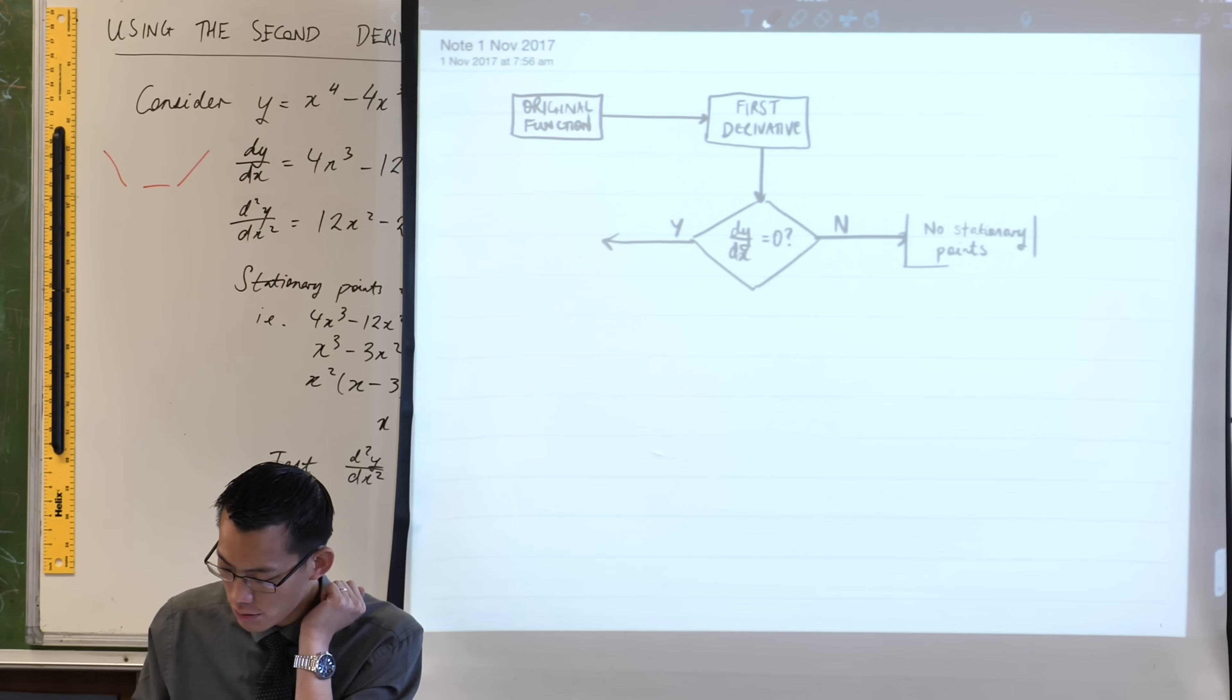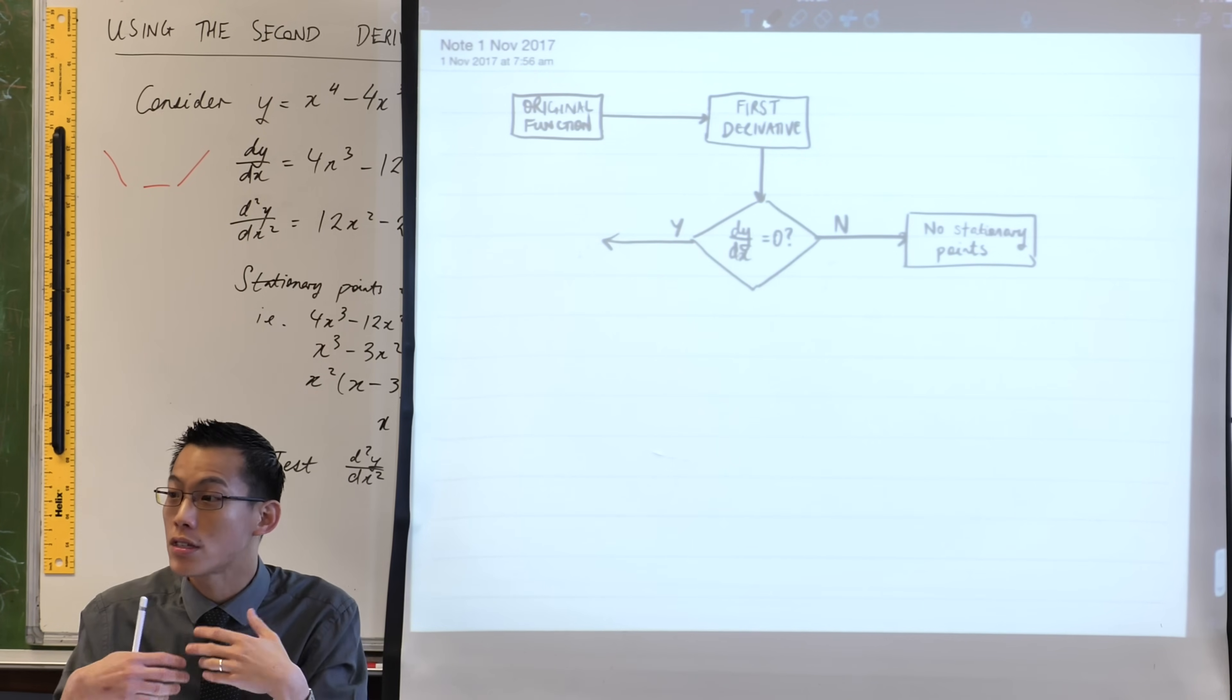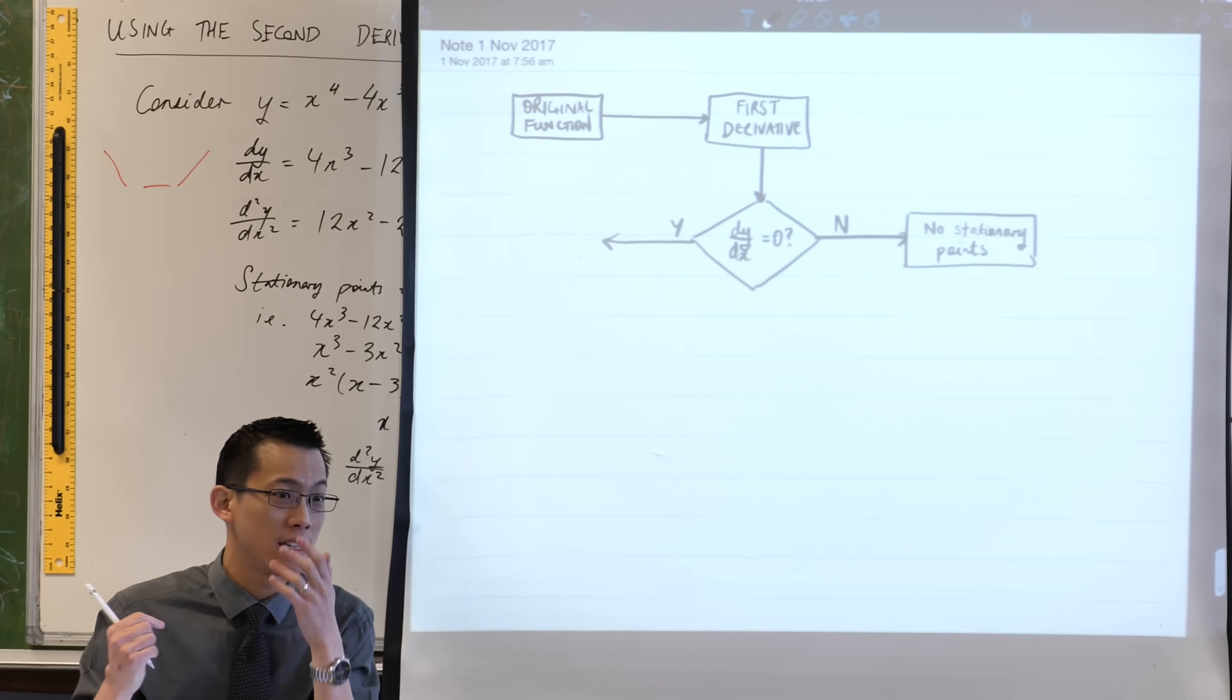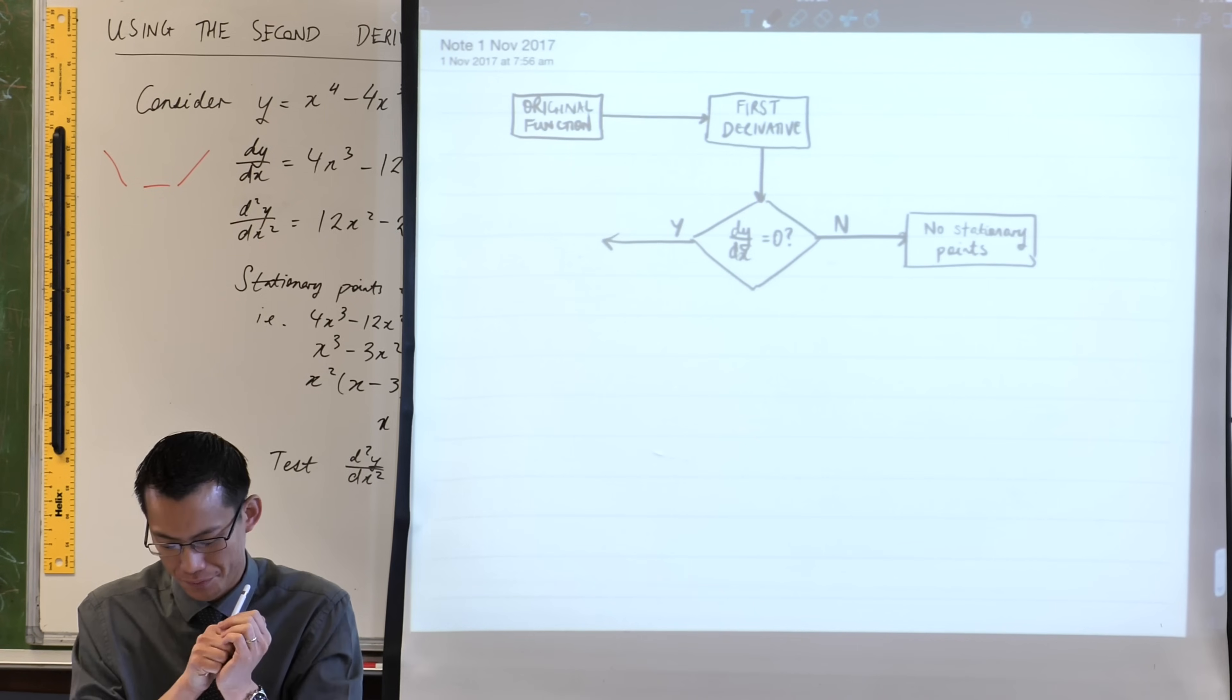Probably the easiest two are the exponential and log functions. They never turn around, they never stop, there are no stationary points. When we learn how to differentiate those, you'll find the derivative is never equal to zero.